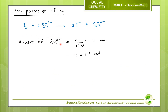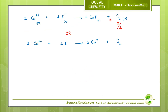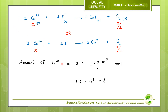Moles of thiosulfate = (0.1/1000) × 15 = 1.5 × 10⁻³ mol. Let moles of thiosulfate = x; according to stoichiometry, moles of I₂ = x/2. Therefore moles of iodine = 1.5 × 10⁻³ / 2 mol. The number of moles of liberated iodine is x/2. According to stoichiometry, moles of Cu²⁺ = twice the moles of iodine = x mol. This stoichiometry holds for both forms of the equation, so you can use either.